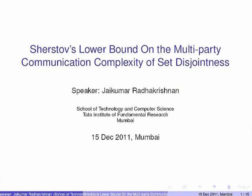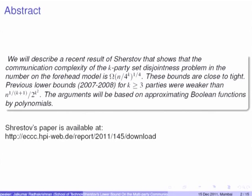This is a talk about communication complexity. We will be showing a lower bound for the multiparty set disjointness problem, and in showing that lower bound, we will see approximation of Boolean functions by polynomials. You can stop me any time — I've tried to keep everything accessible to everybody, but that may not be true.